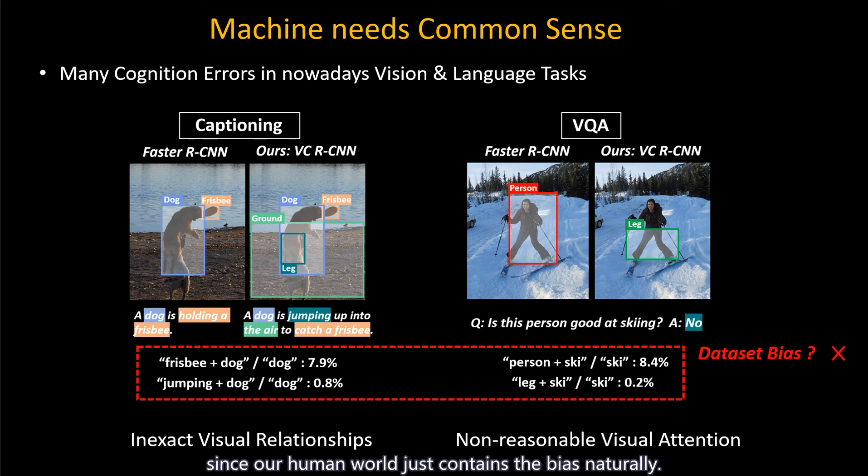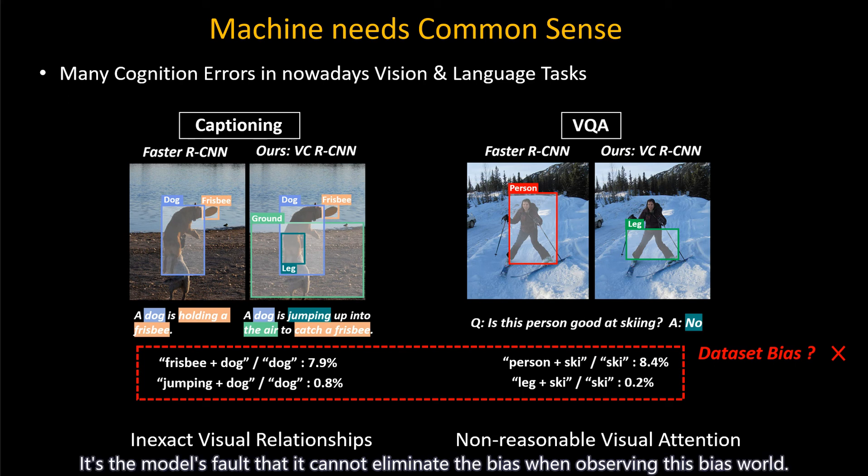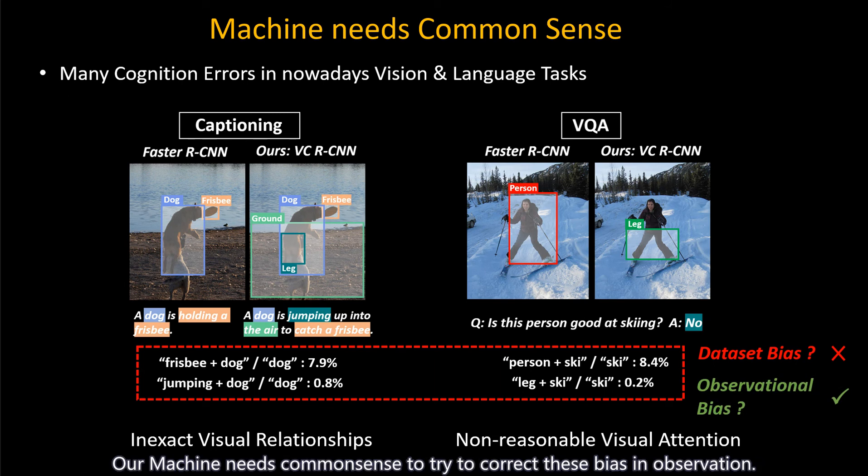Since our human world just contains the bias naturally, it is the model's fault that it cannot eliminate the bias when observing this bias world. Our machine needs common sense to try to correct this bias in observation.